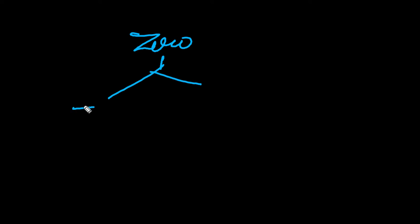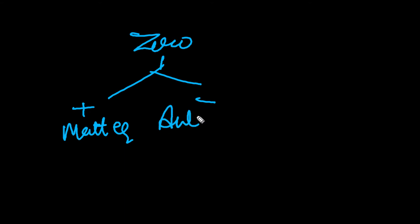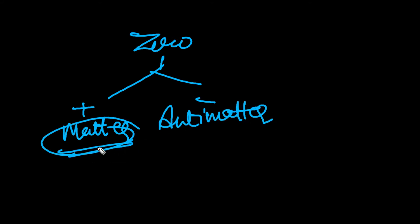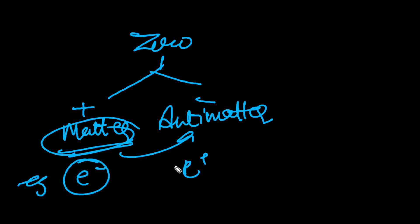Now let's talk about zero. Zero means something that we cannot define. Zero means two things: positive and negative. Neutron means zero, positive is matter, and negative is antimatter. So matter is the opposite of antimatter. For example, electron and positron — the positron is the electron's antimatter and it is the opposite. They have the same mass.